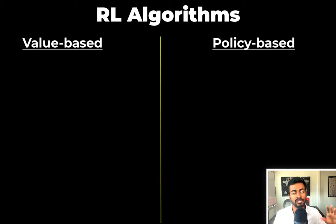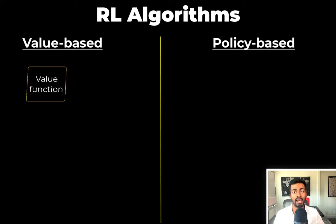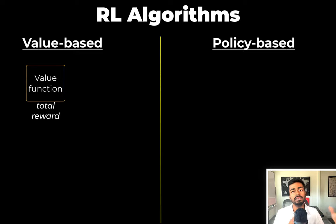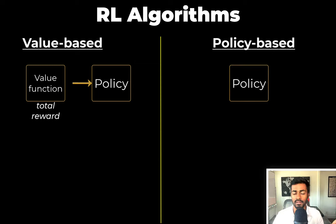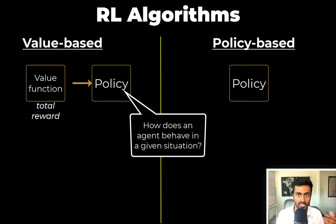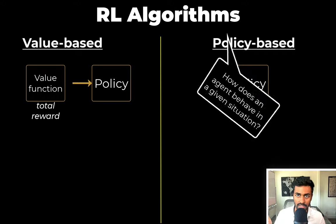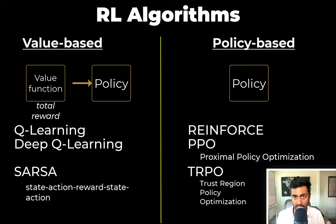Reinforcement learning algorithms are trying to maximize a total reward. This can happen in multiple ways, so we can subcategorize reinforcement learning algorithms into value-based methods or policy-based methods. Value-based methods will determine a value function which quantifies the total reward, and using this value function we determine an optimal policy. Policy-based methods determine an optimal policy directly with no value function. Policy is just how an agent behaves in a certain state — given a state, what action will it take? An example of value-based methods is Q-learning; an example of policy-based methods is proximal policy optimization.